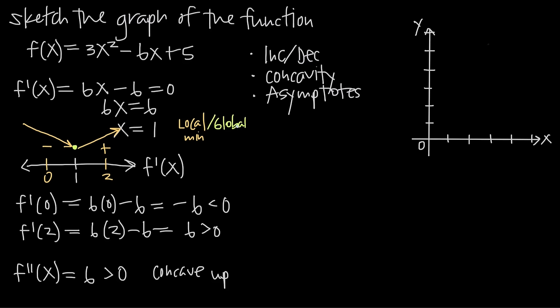We know x = 1 is a global minimum. What about asymptotes? For vertical asymptotes, there's nowhere this function is going to be undefined — polynomial functions are continuous everywhere. So there's no vertical asymptote. There's also no horizontal asymptote because we're not dealing with a rational function, and for the same reason, there's no slant asymptote. There are no asymptotes for this function.